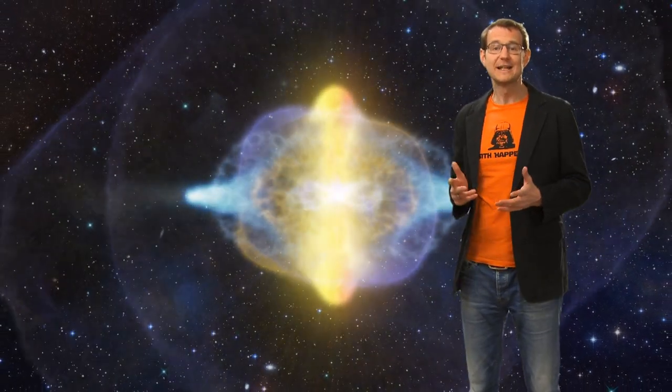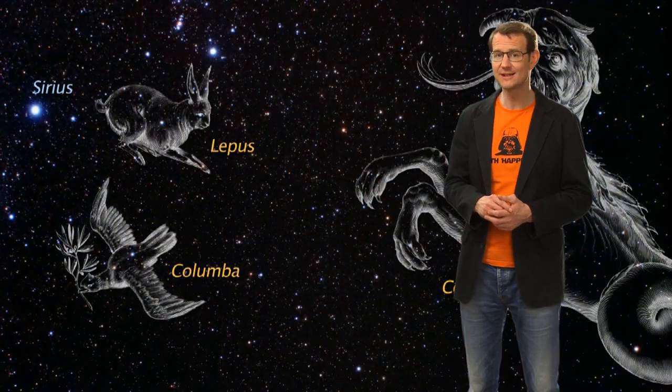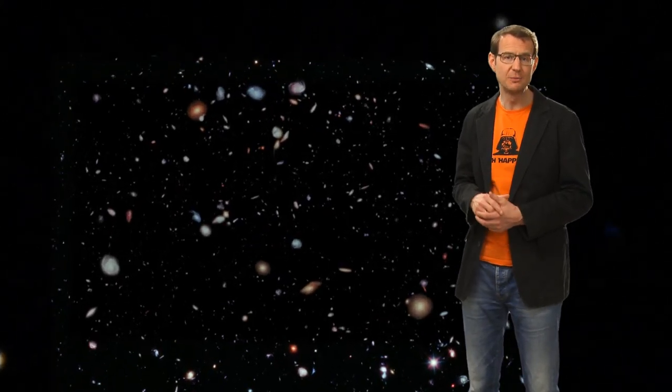Supernovae are extremely bright. In fact, they are so bright that they usually outshine their entire host galaxies. And that is why it's relatively easy to detect them even out to large cosmological distances. In 2011, the Nobel Prize in Physics was awarded to two teams that measured the brightness of many supernovae to map out their distances.